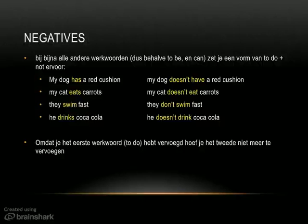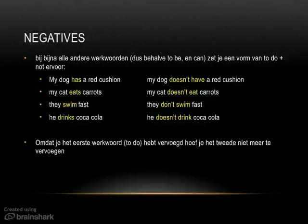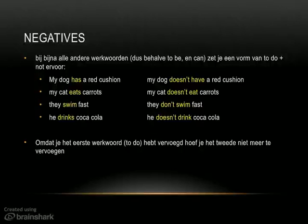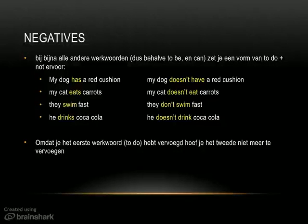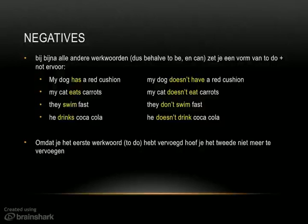What you'll see is that in the negative sentence, the first verb you use - doesn't or don't - is already conjugated (vervoegd). The second verb is actually the whole verb: he doesn't have, from to have; he doesn't eat, from to eat; they don't swim, from to swim; he doesn't drink, from to drink. The first verb is conjugated and the second verb stays in its whole form.